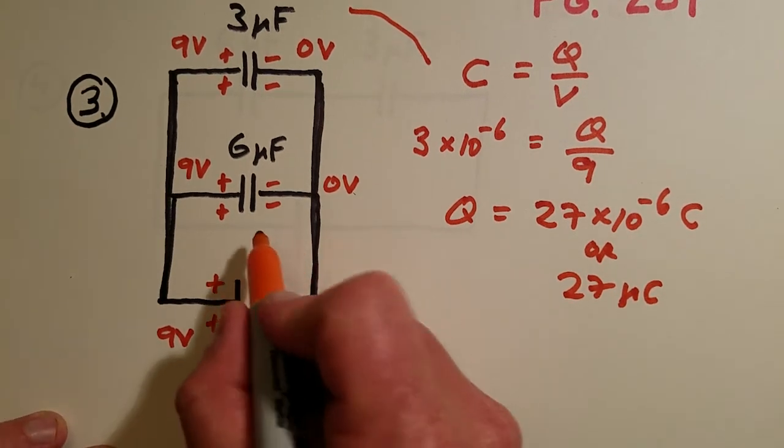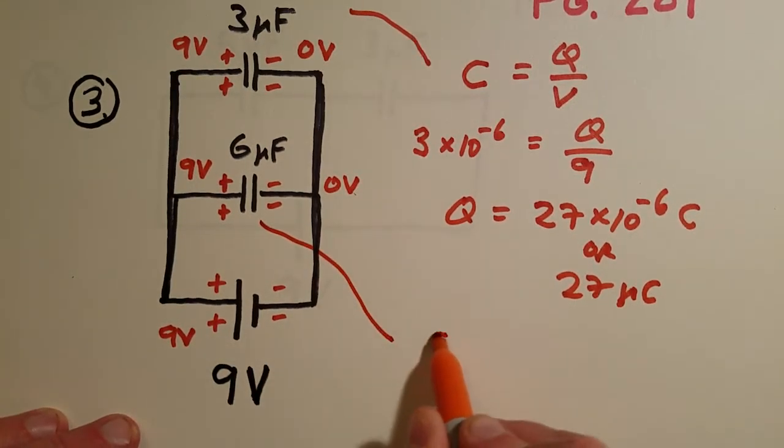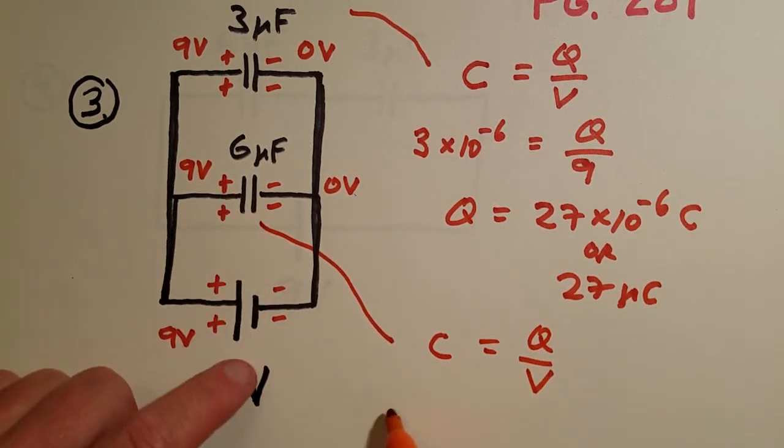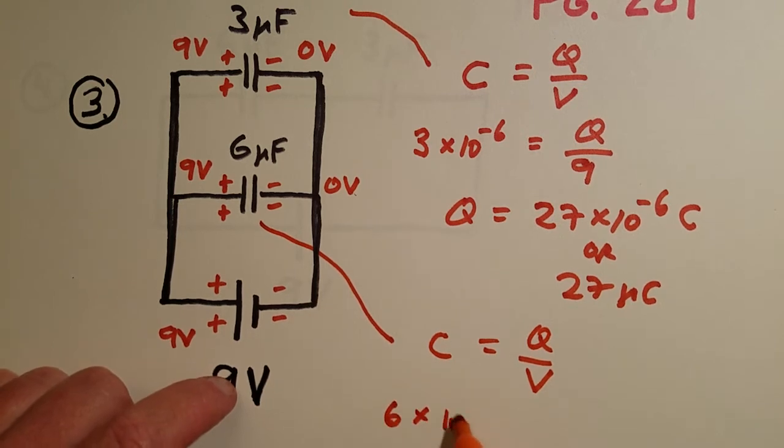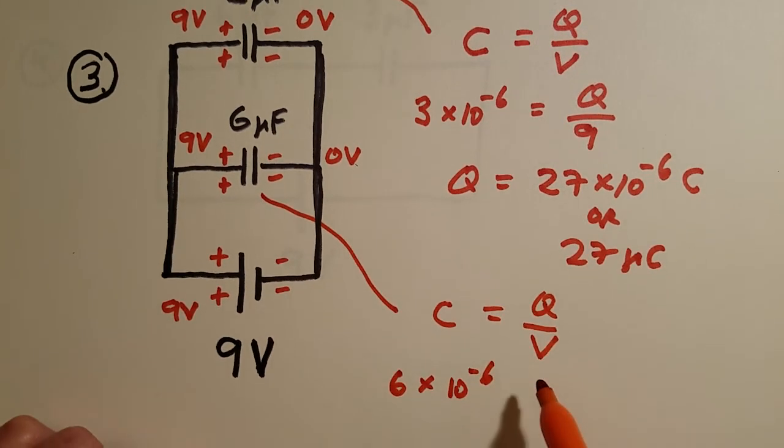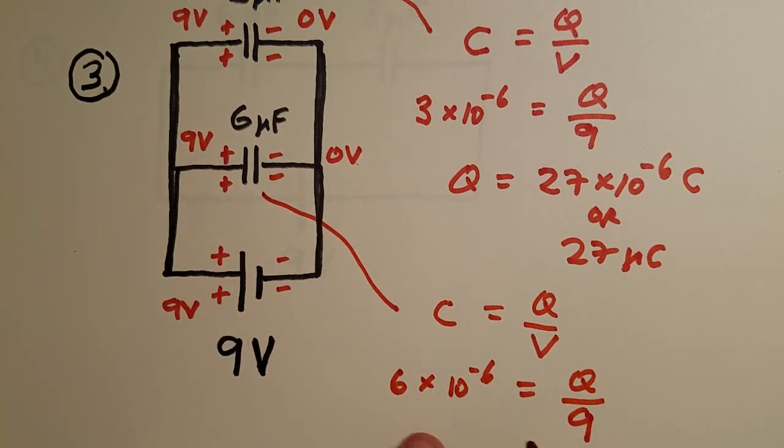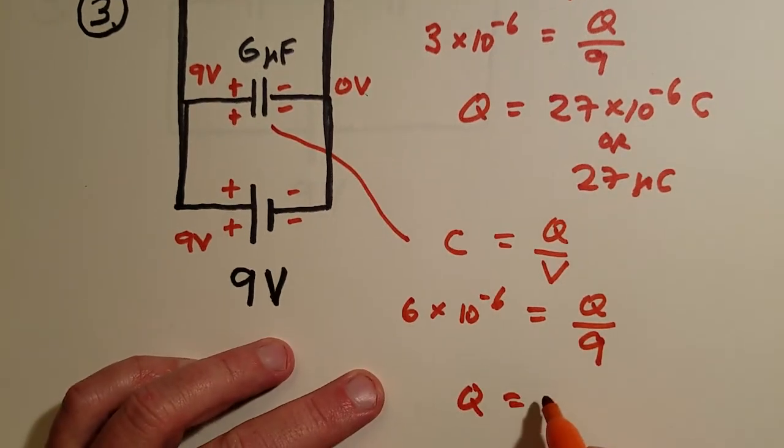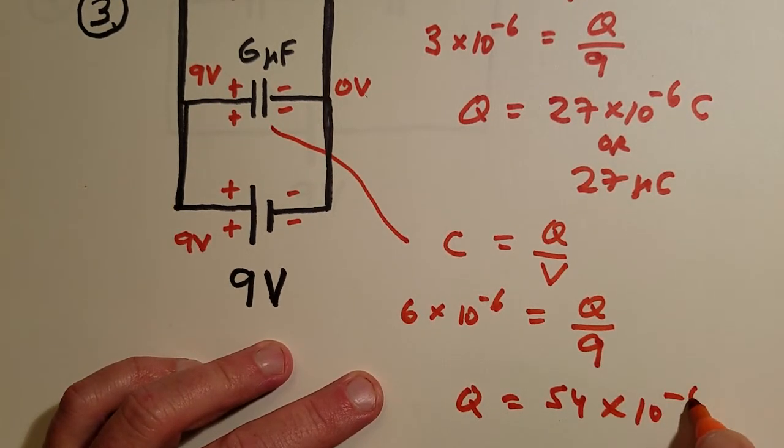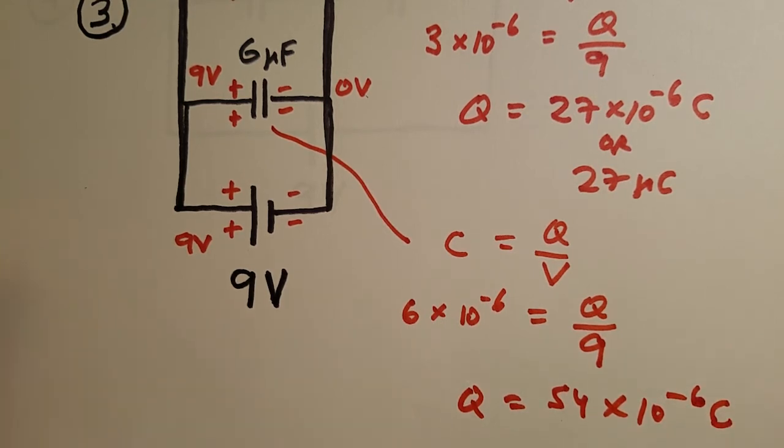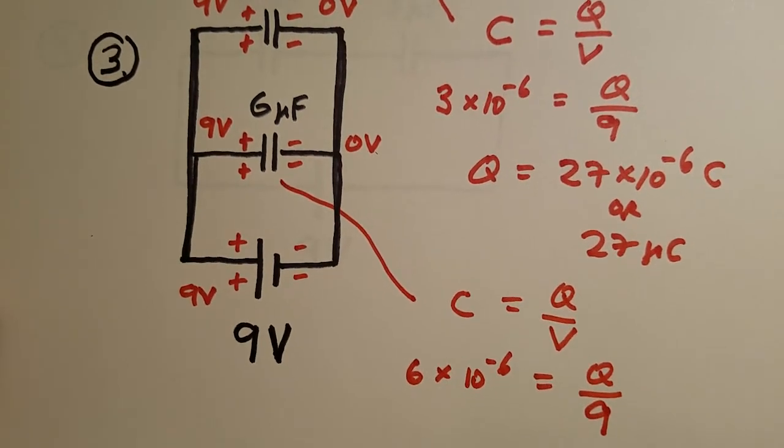I'll just go ahead and show the calculation anyway. If you do C is Q over V on this guy, your capacitance is six microfarads this time—six times ten to minus six—your charge we in principle don't know yet but we'll find it shortly, and you also have nine volts across that guy. So there's a nine volt drop. Nine times six is fifty four, so you get a charge on that capacitor of fifty four times ten to minus six coulombs, or fifty four micro coulombs.